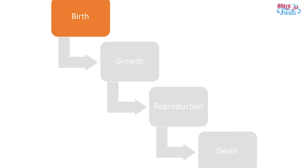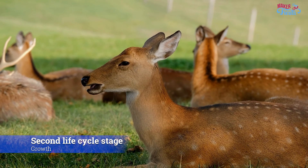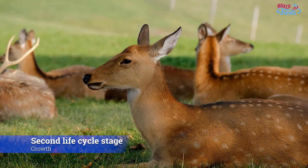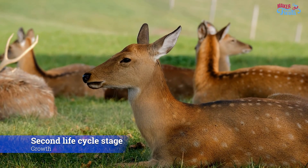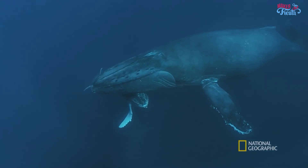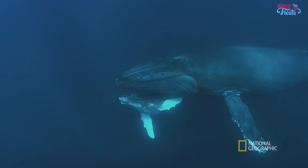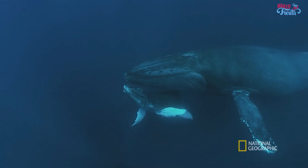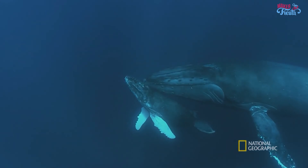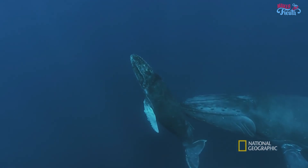After birth, animals grow and develop, changing in size and shape. As animals grow older, their bodies change so they can better survive in their surroundings. Growing and developing is very important for all living things. From when they are born until they become adults, animals change in ways that help them be their best and live well.